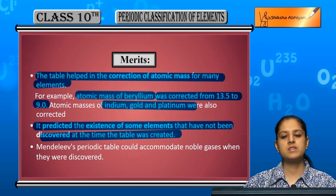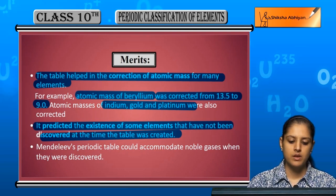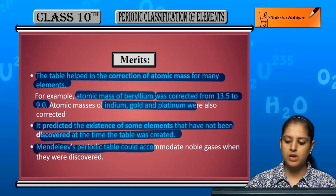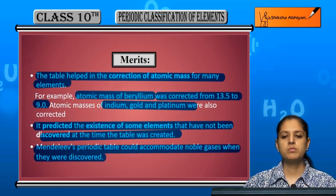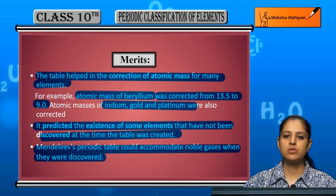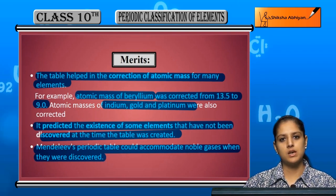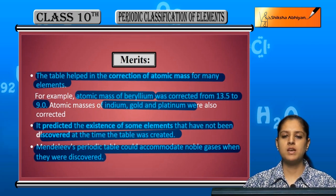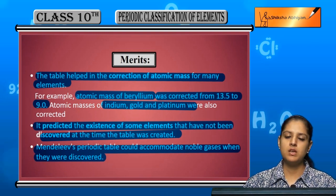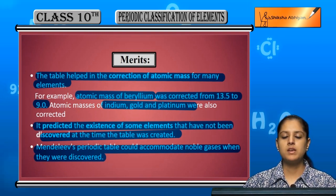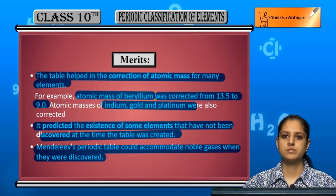Mendeleev's periodic table could accommodate noble gases when they were discovered, placing them appropriately within the table's structure.